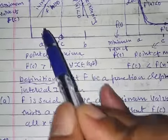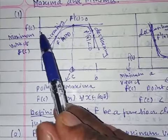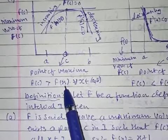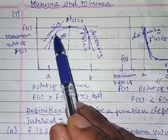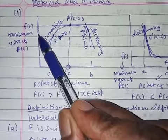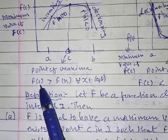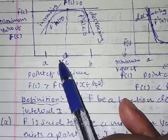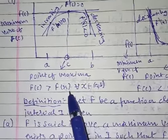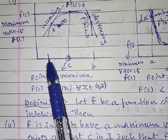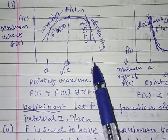It is clear that for any x in the open interval (a, b), if you take a point x and read from the curve, you get f(x). The point c on the curve gives f(c). So f(c) is greater than f(x) for every x belonging to the open interval (a, b) — f(c) will always be greater than any value between f(a) and f(b).